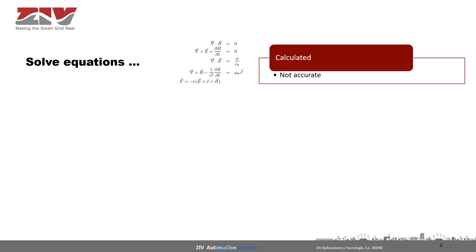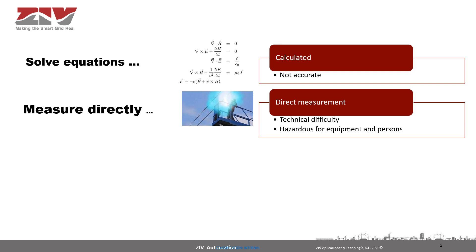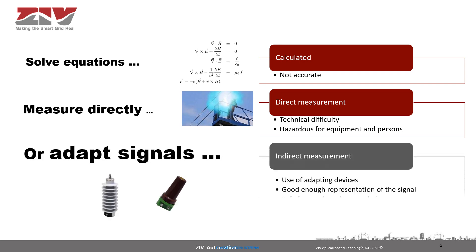The scientist we all carry inside can tell us why not to solve some equations. But we know that the reality has many variables that we cannot control, that influence the result, and that will not be accurate enough just solving some equations. The opposite way will be just measuring directly the values on the network. But this, besides being technically difficult, it's risky for the equipment and the people. So we typically take the intermediate way, which is adapting the signal we want to measure to values that are accurate enough and safe for the equipment and the people. And for that, we use devices that adapt the signal.